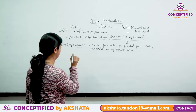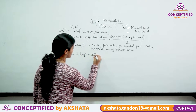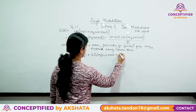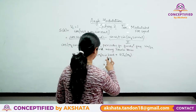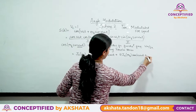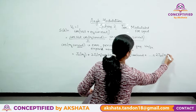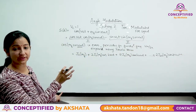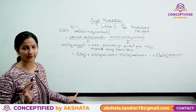Expanding cos(mf·sin(ωm·t)) using Fourier series gives: J₀(mf) + 2·J₂(mf)·cos(2ωm·t) + 2·J₄(mf)·cos(4ωm·t) + … + 2·J₂ₙ(mf)·cos(2n·ωm·t) + … Only even harmonics appear, because this is an even function.